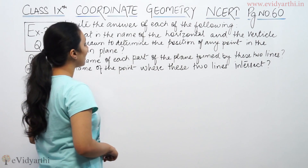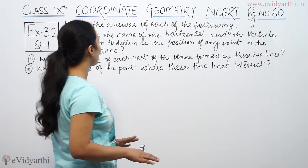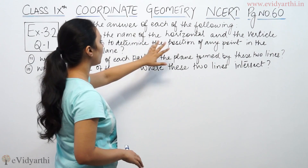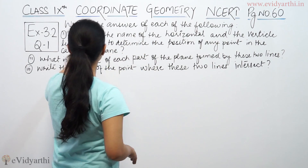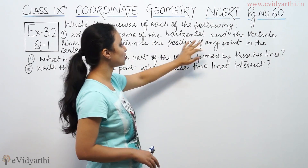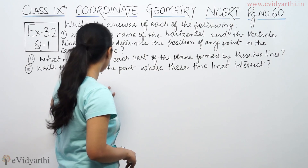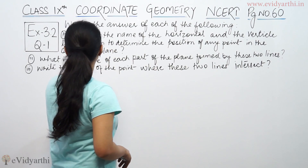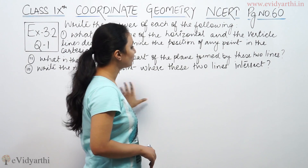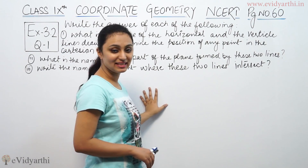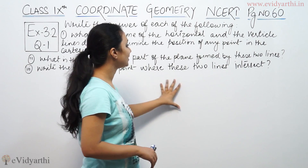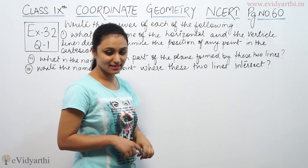This says: write the answer for each of the following. What is the name of the horizontal and vertical lines drawn to determine the position of any point in the Cartesian plane? Then, what is the name of each part of the plane formed by these lines? Then, write the name of the point where these two lines intersect.